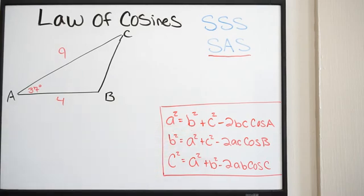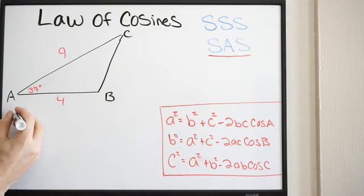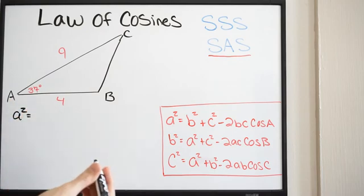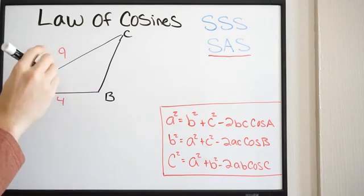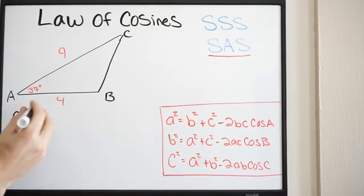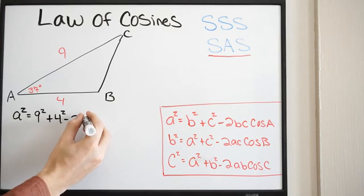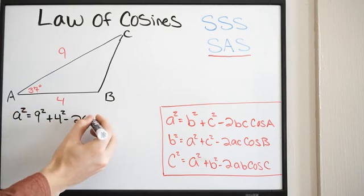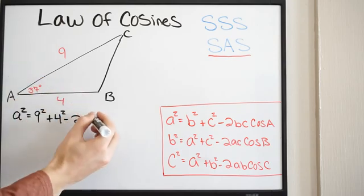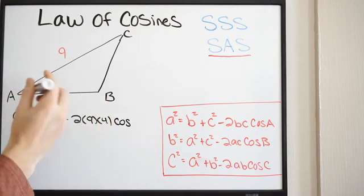Remember, lowercase letters refer to sides and uppercase letters refer to angles. We're going to plug our information in: A squared equals B squared — which is 9, so 9 squared — plus C squared, which is 4, so plus 4 squared. Then minus 2 times side B (which is 9) times side C (which is 4) times cosine of angle A, which is 37 degrees.